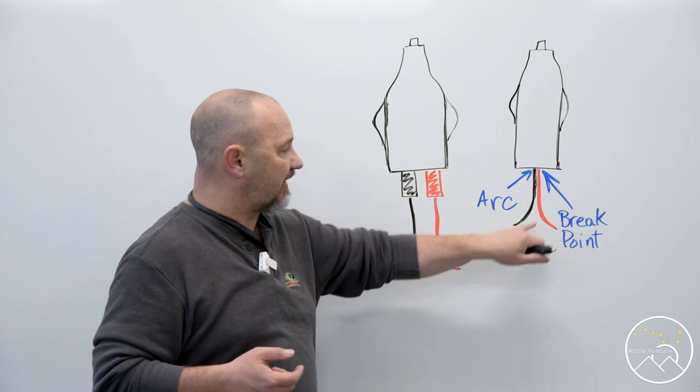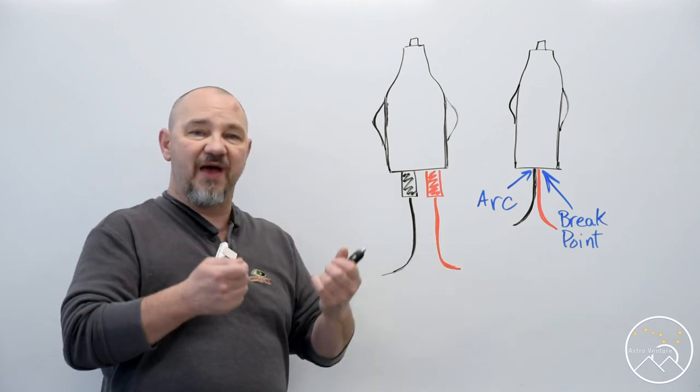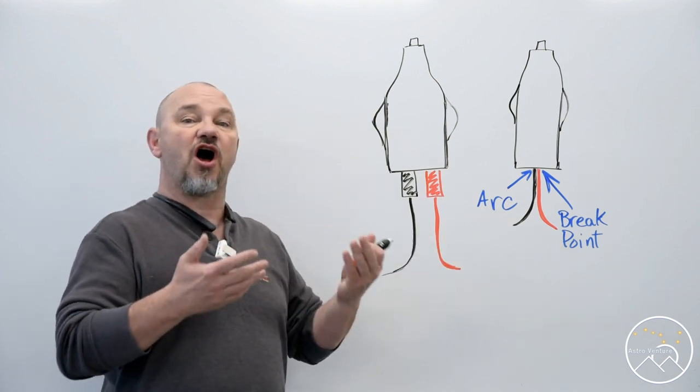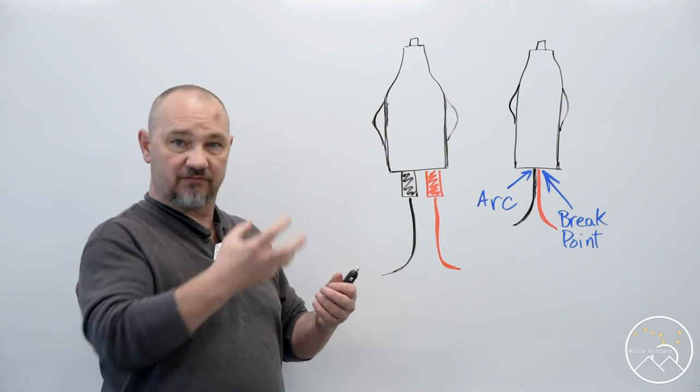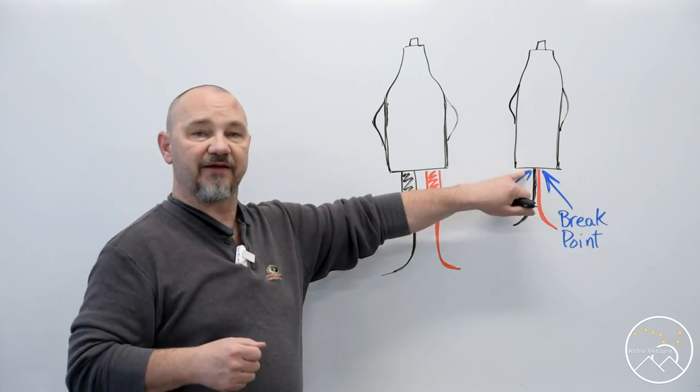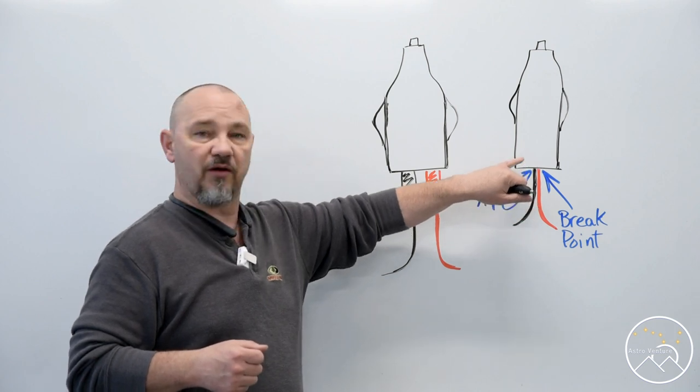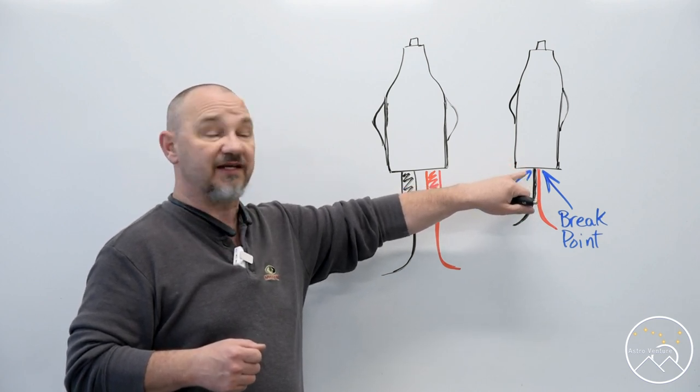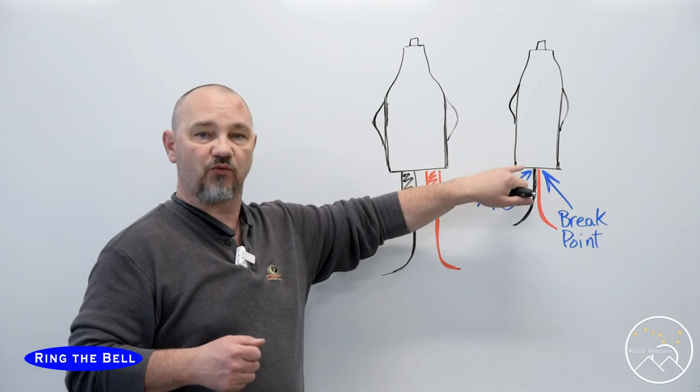Reason being is the wires out here whenever they bend and flex it's always a soft bend unless you physically crush it. But where they go into the actual plug that is always going to be a hard bend any time that they flex. And that's why they crack and break right there.